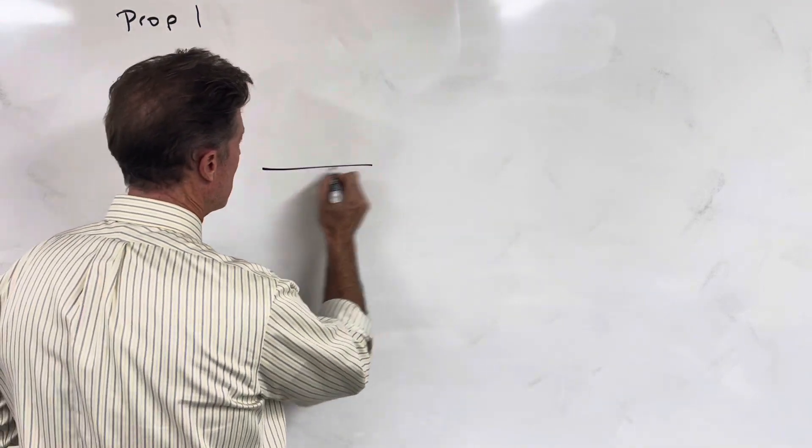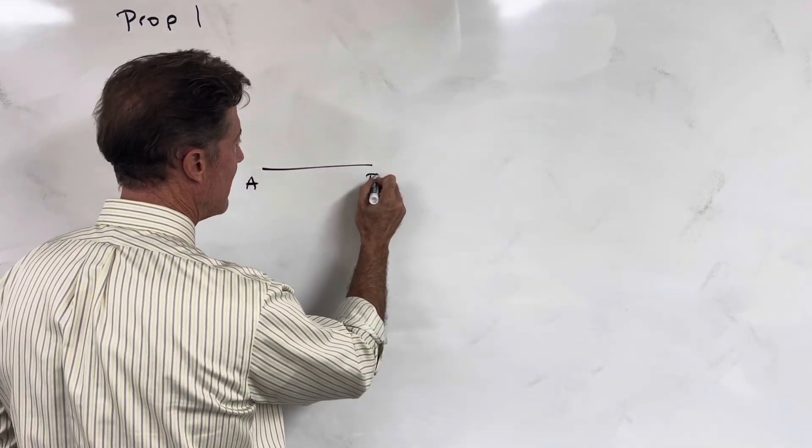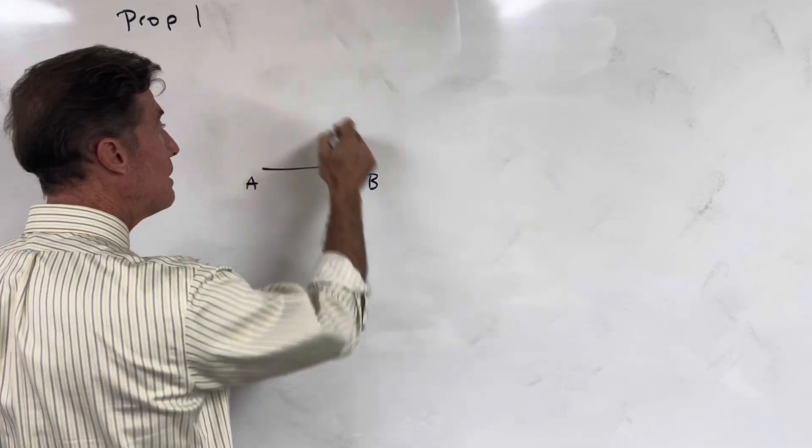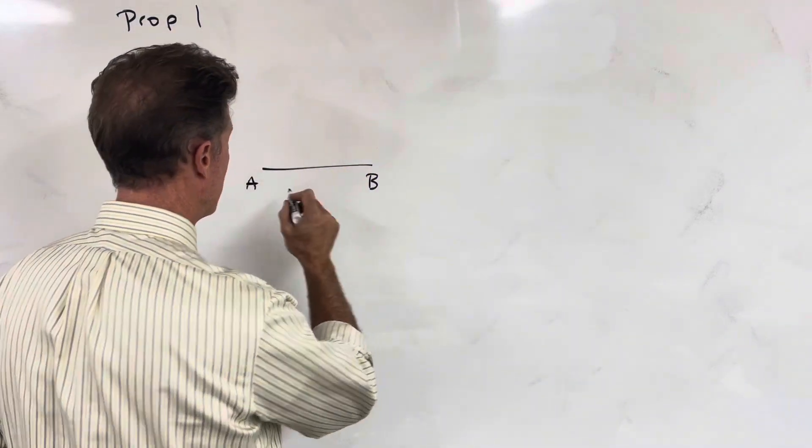So let AB be our given finite straight line. We want to build an equilateral triangle on this straight line.